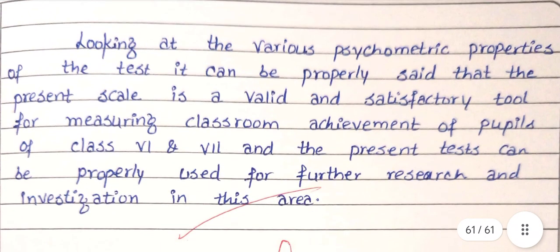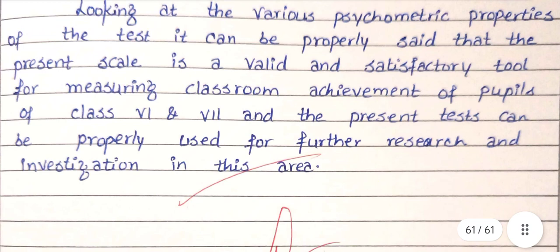Looking at the various psychometric properties of the test, it can be properly said that the present scale is a valid and satisfactory tool for measuring classroom achievement of pupils of class 6th and 7th, and the present test can be properly used for further research and investigation in the area. Dear students, I hope this video was helpful. Thanks for watching.